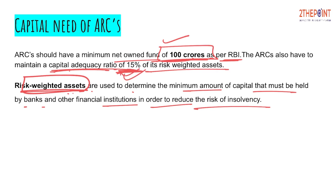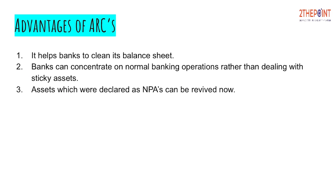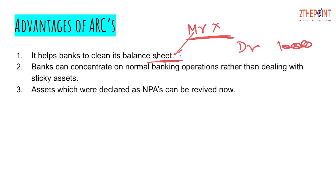So the capital norms are: minimum 100 crores net owned fund and a 15 percent capital adequacy ratio of risk-weighted assets. There is no government funding for ARCs as of now — they have to arrange this 100 crores on their own. Coming to the advantages of ARCs: first, it helps banks clean their balance sheets. There are many defaulter accounts held with every bank, and by selling these accounts to ARCs, banks can significantly reduce their debtor balances and concentrate on normal banking operations rather than dealing with sticky assets.